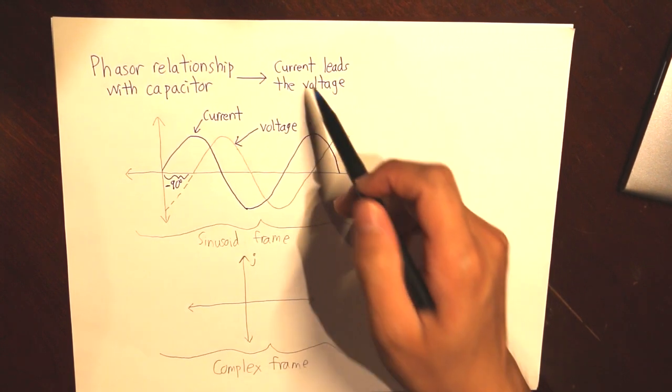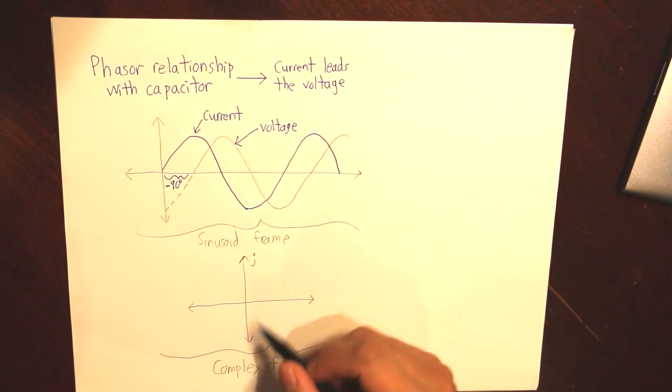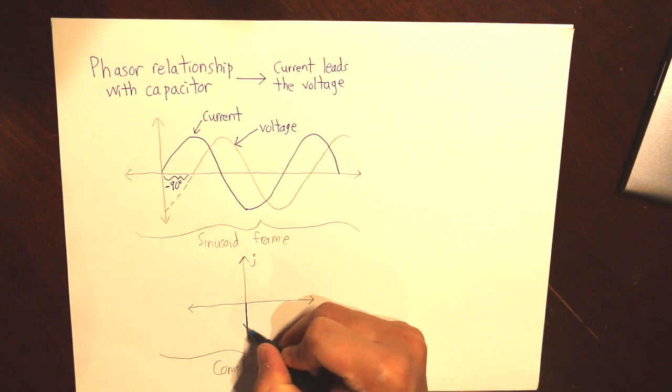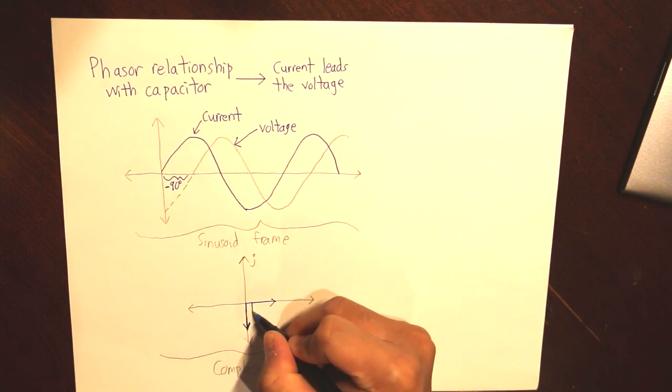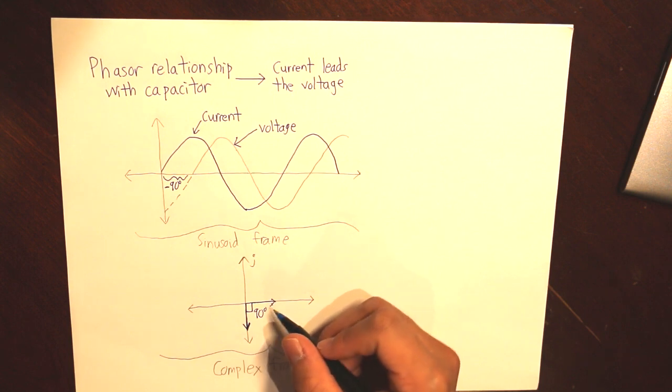So we have the complex frame, and since current is leading the voltage, minus 90, this is what it will look like. So this axis is the current, and this axis is the voltage.